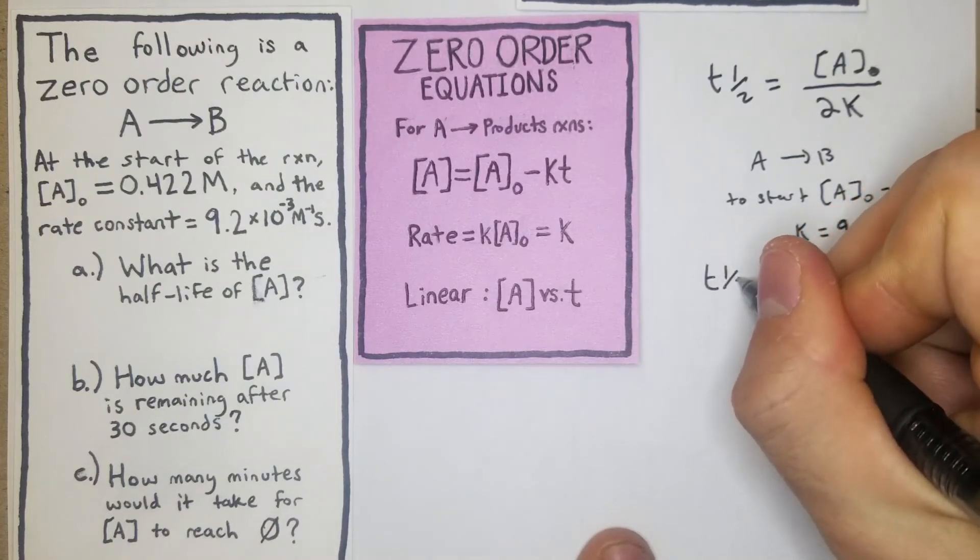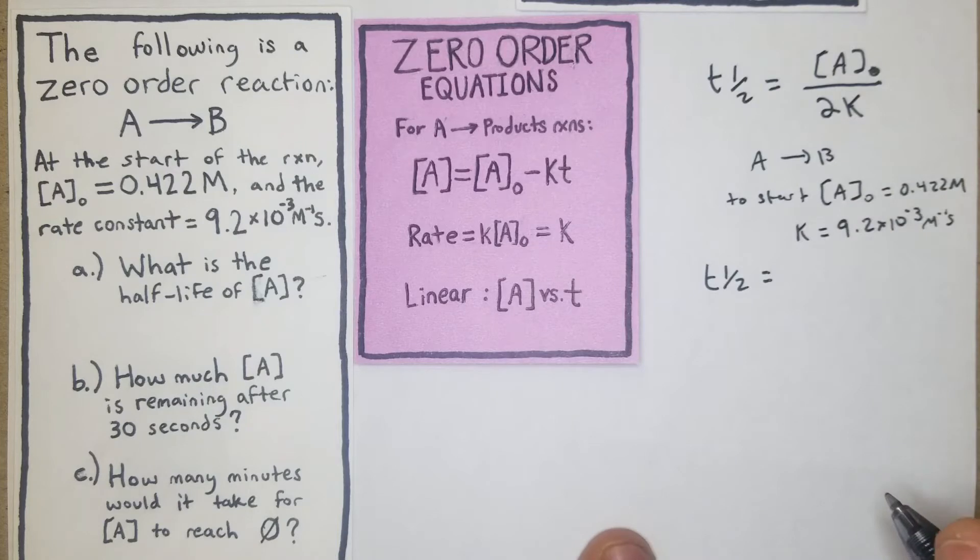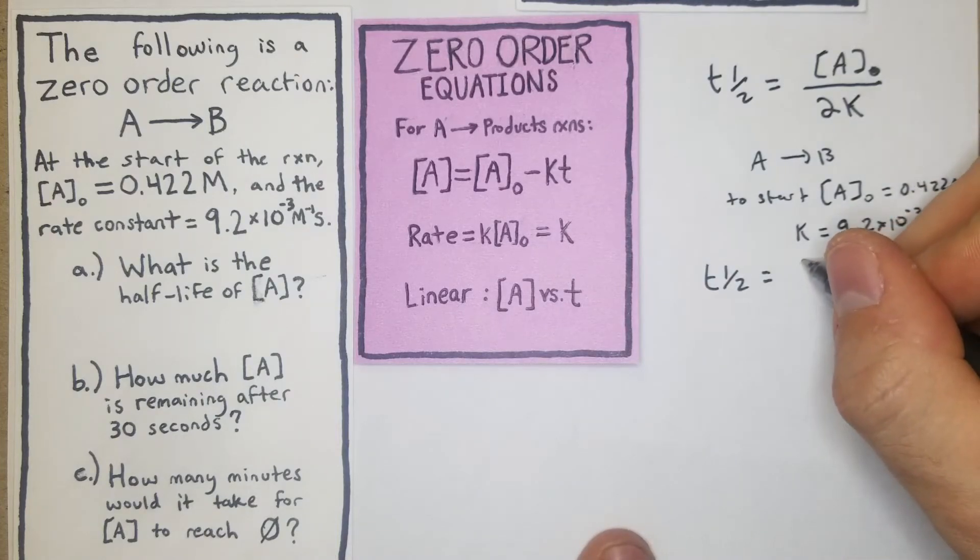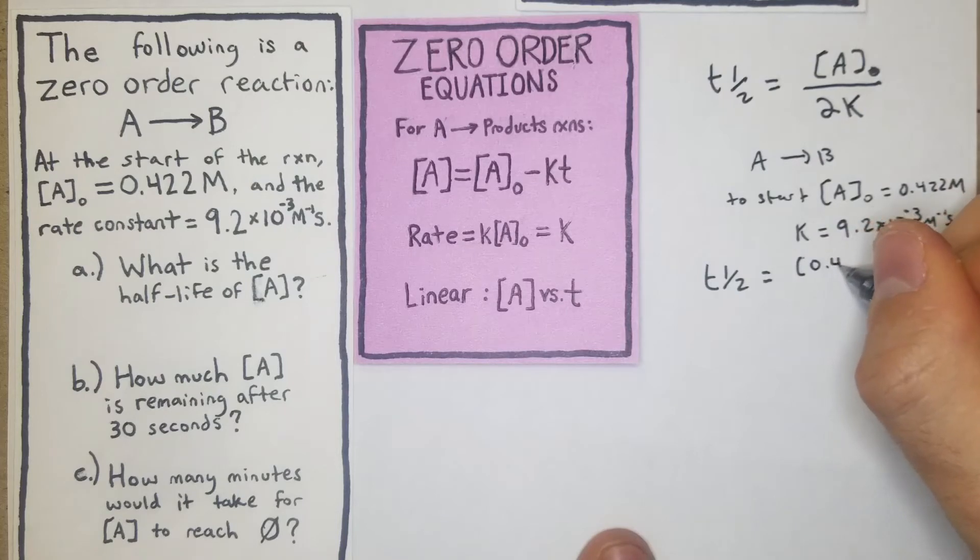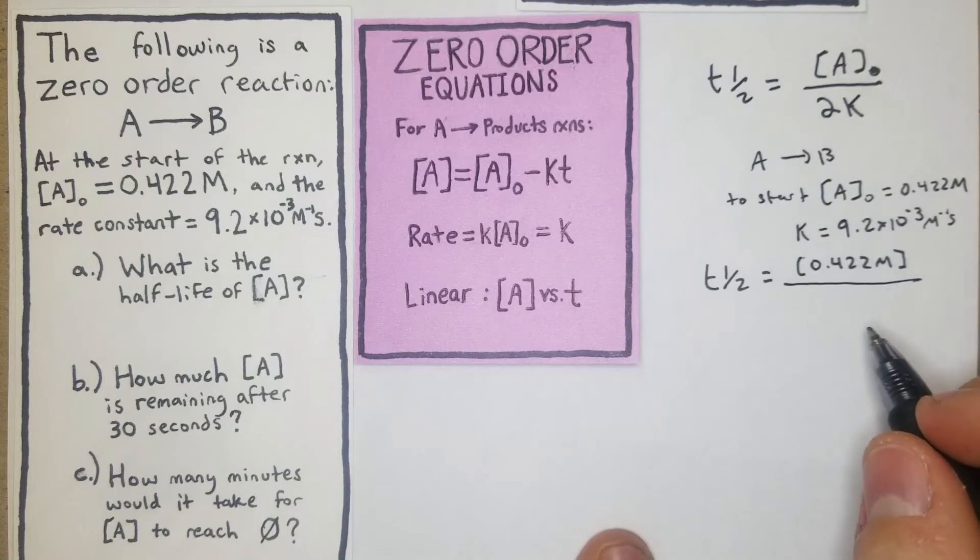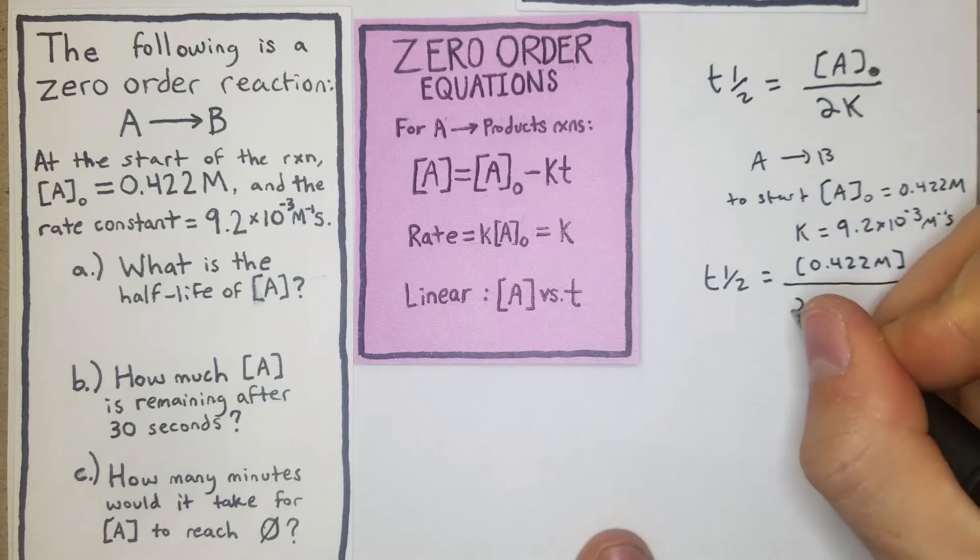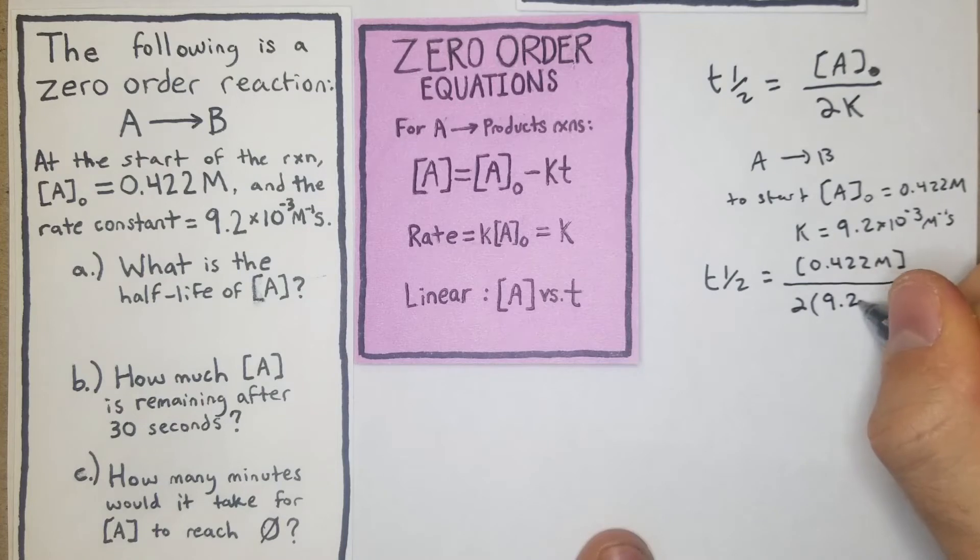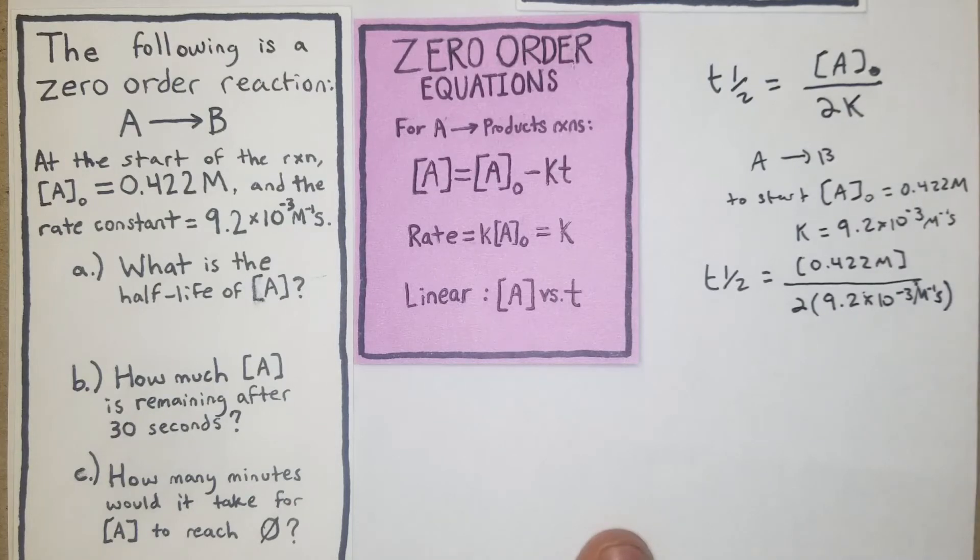So from there we're just going to plug that right into the formula. The half-life is going to be our A value which is 0.422 M over 2 times K, 9.2 × 10⁻³ s⁻¹.